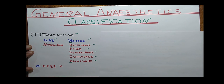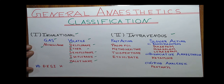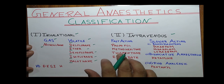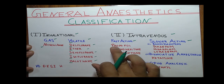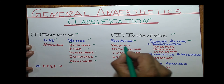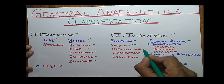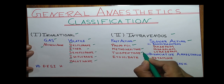Moving on to the next category, that is intravenous anesthetics. Intravenous is also divided into fast-acting and slower-acting. In fast-acting intravenous, there are four drugs: propofol, methohexitone, sodium thiopentone, and etomidate.